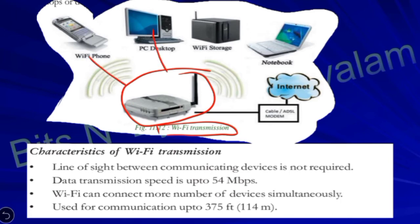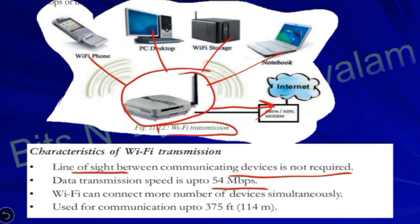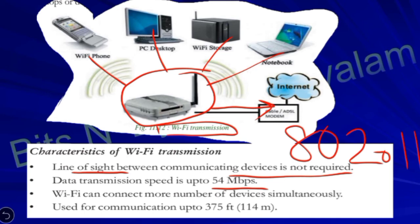The data transmission speed and data transfer rate of Wi-Fi can reach 54 Mbps. Not all standards achieve 54 Mbps — for example, Wi-Fi standard 802.11a has a data transfer rate of 54 Mbps, while newer standards can reach up to approximately 1300 Mbps.